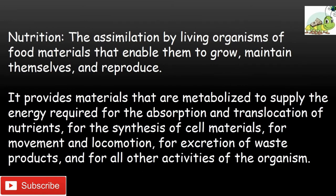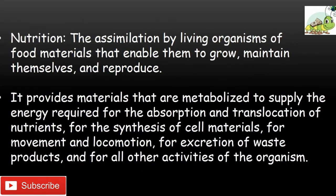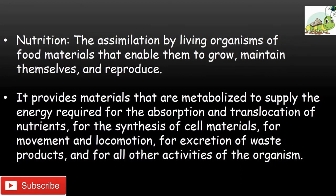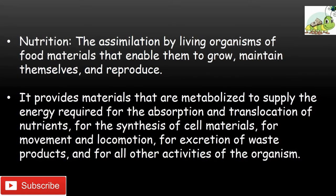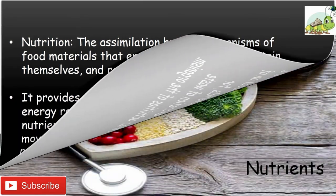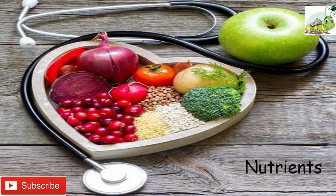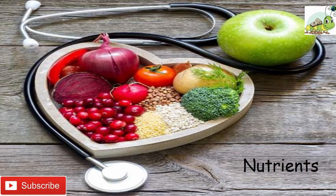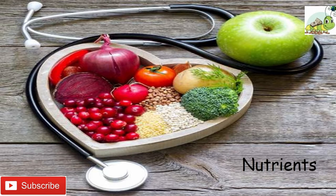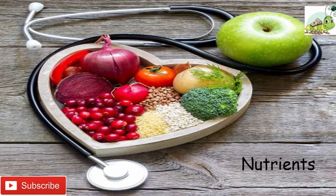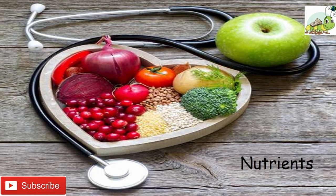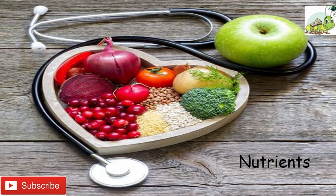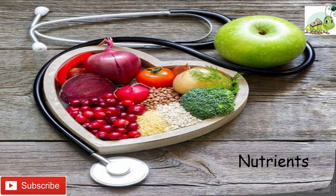Regarding nutrients: some precursors of cell materials can be synthesized by the cell from other materials, while others must be supplied in foods. All the inorganic materials required for growth, together with an assortment of organic compounds — whose number may vary from 1 to 30 or more depending on the organism — fall into the latter category. Although organisms are able to synthesize non-essential nutrients, such nutrients are frequently utilized directly if present in food, saving the organism energy.